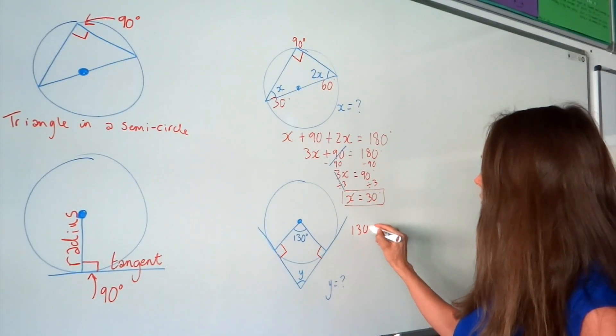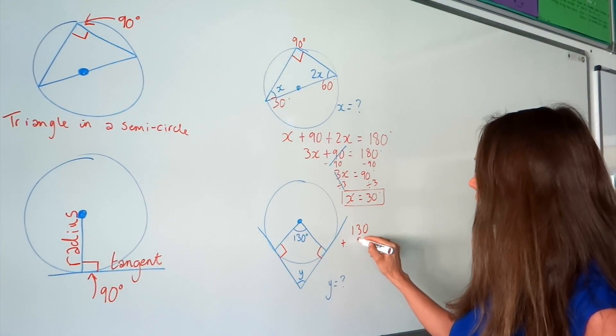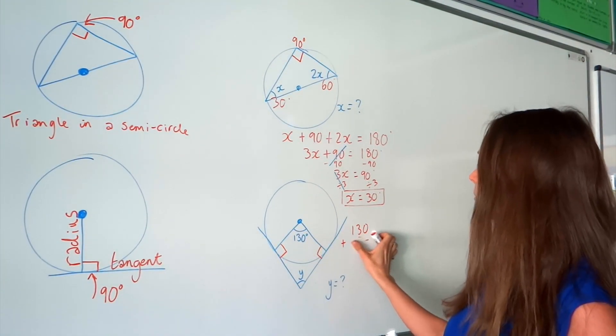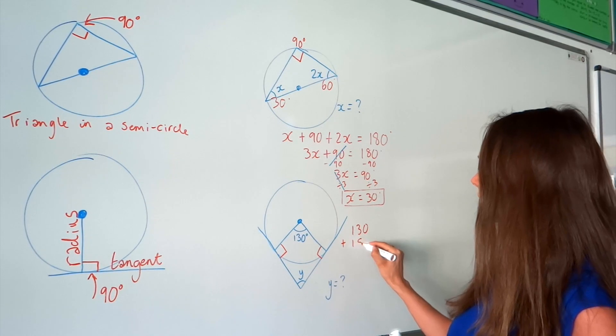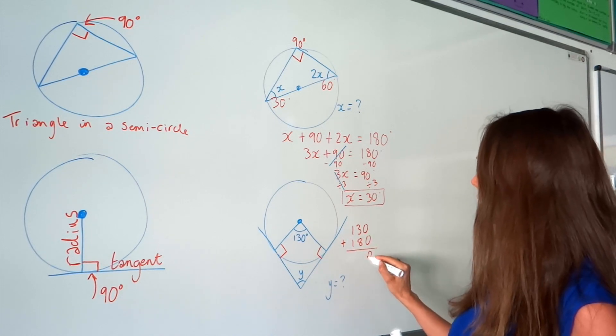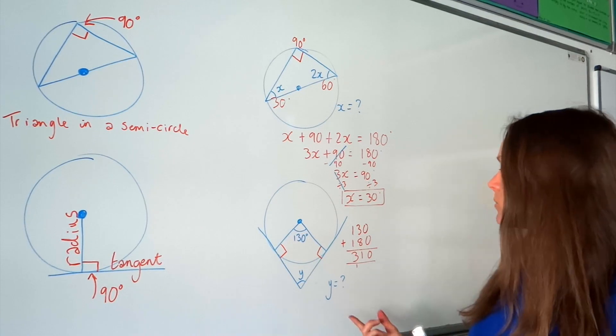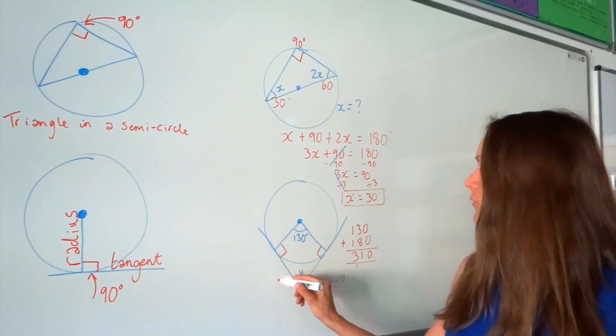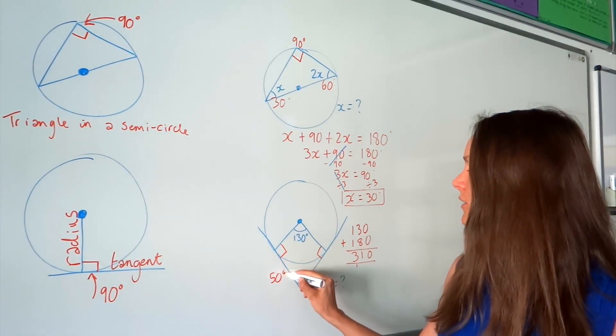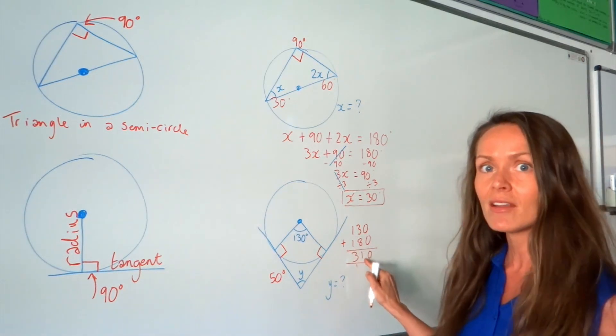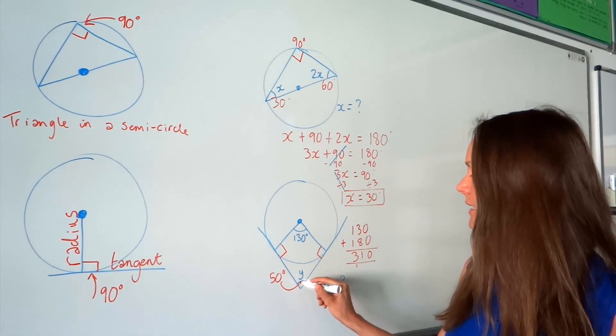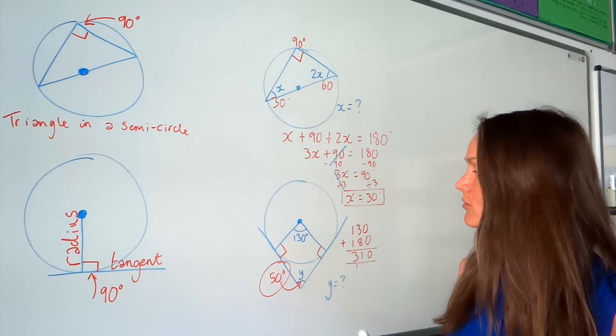So, so far, if I add those angles together. So, we've got 130 plus 90 plus 90, which is 180. So, if I add those together, so far I've got 310 degrees. Which means the remaining angle must be 50. Because if you subtract 310 from 360, it leaves me with 50 degrees.